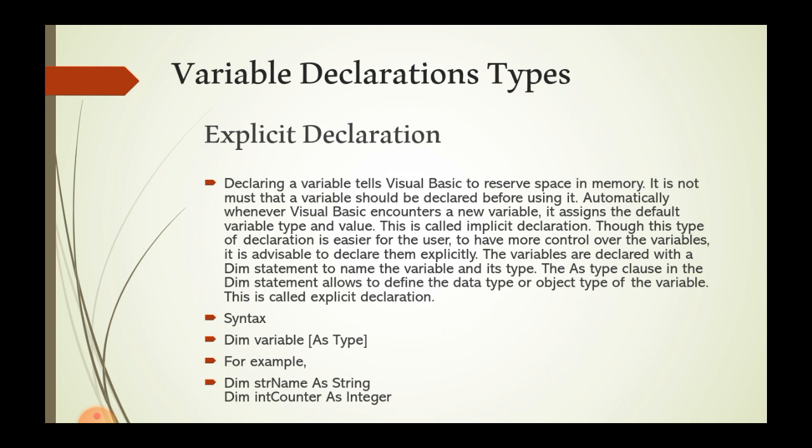Explicit declaration is done with a Dim statement. The syntax is: Dim VariableName As Type. For example: Dim strName As String — where Dim stands for Dimension, strName is the variable name, and String is the data type.